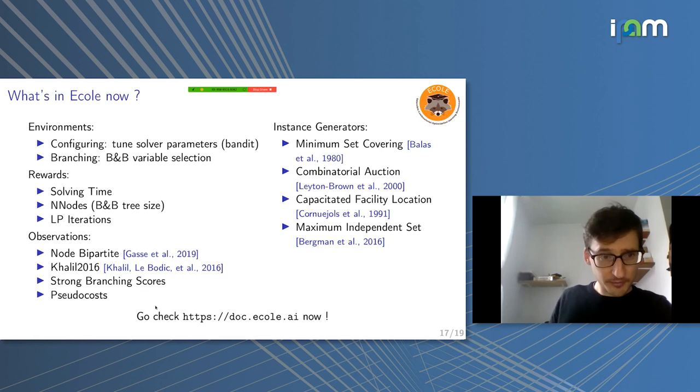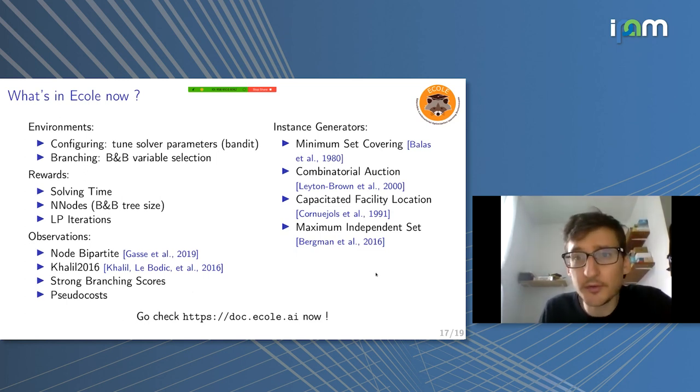We have a few observation functions, so two from the literature, node bipartite, and also the features from the paper from Khalil, who did the learning to branch on single instances, and a bunch of others. And we also have in the library what we call instance generators. We picked some standard instance generators from the literature, the ones we had used in our papers, and we implemented them in C++, so they are fast and they are reproducible. If you set the same seed and you generate instances, you're going to have the exact same instances. So if you reuse the same instance generator as a paper, you are guaranteed that you use the exact same instances. And you can just change the size of those instances if you want, make them bigger or smaller. You can parameterize those generators. So you can check all of those features online because the library is available and we have a nice documentation page where everything is detailed.